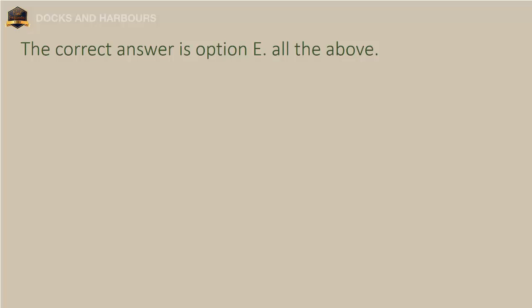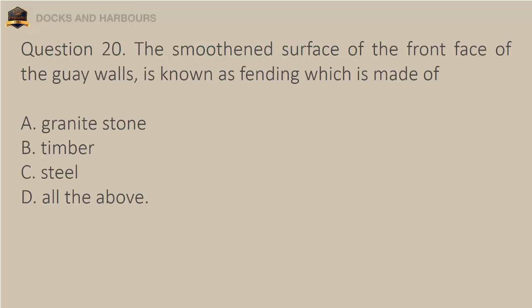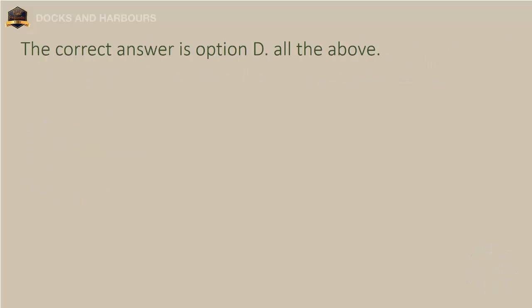Question 20. The smoothened surface of the front face of the quay walls is known as fending, which is made of: A. Granite stone, B. Timber, C. Steel, D. All the above. The correct answer is option D: All the above.